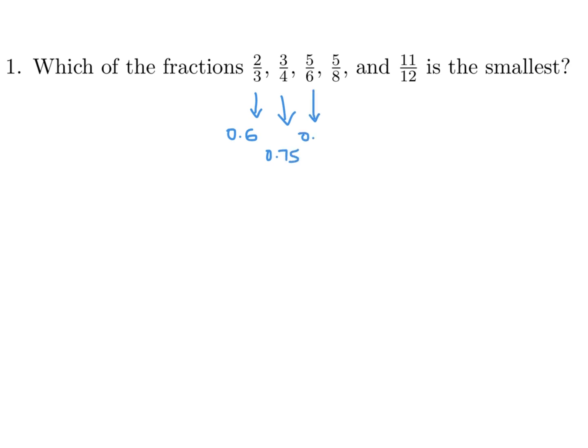about 0.83, that one is 0.62, and this one is 0.9. This one is about 0.66 to two decimal places, so we'll need two decimal places — put a zero there. Now we can compare them very easily, and you can see that the smallest is this one: 5 over 8.